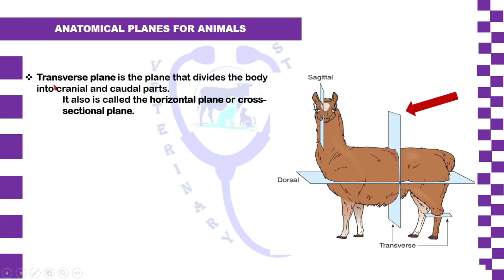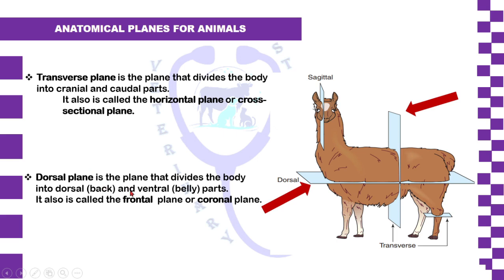The transverse plane divides the body into a cranial part and a caudal part. It is also called the horizontal plane or cross-sectional plane. The dorsal plane divides the animal into dorsal and ventral parts, and is also called the frontal or coronal plane.